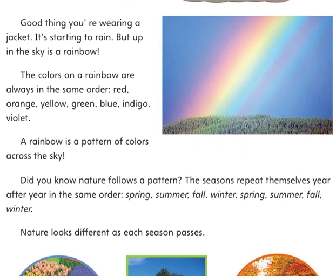Good thing you're wearing a jacket — it's starting to rain. But up in the sky is a rainbow. The colors on a rainbow are always in the same order: red, orange, yellow, green, blue, indigo, violet. A rainbow is a pattern of colors across the sky.